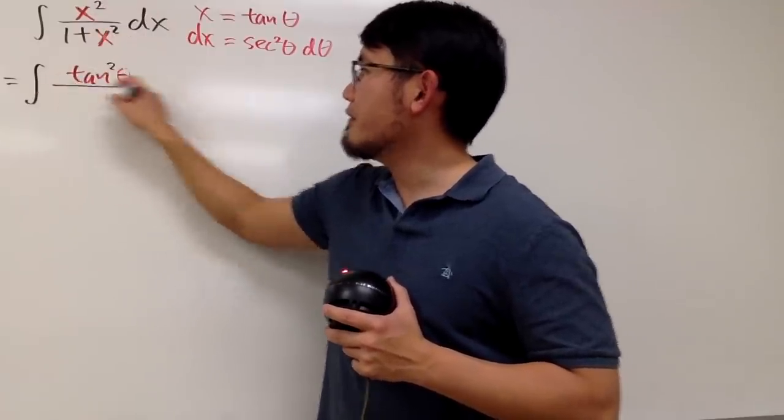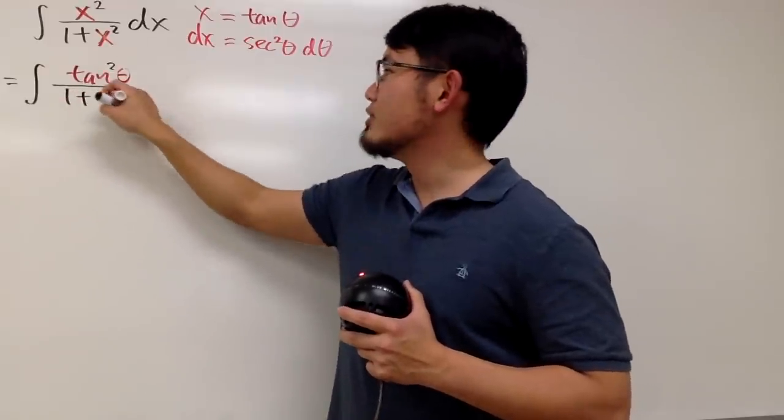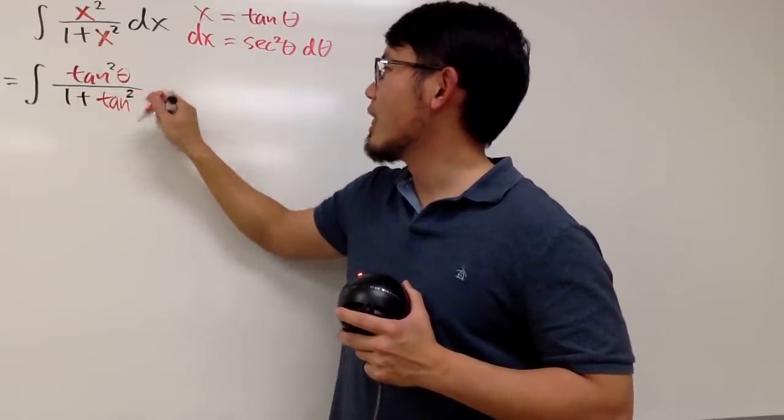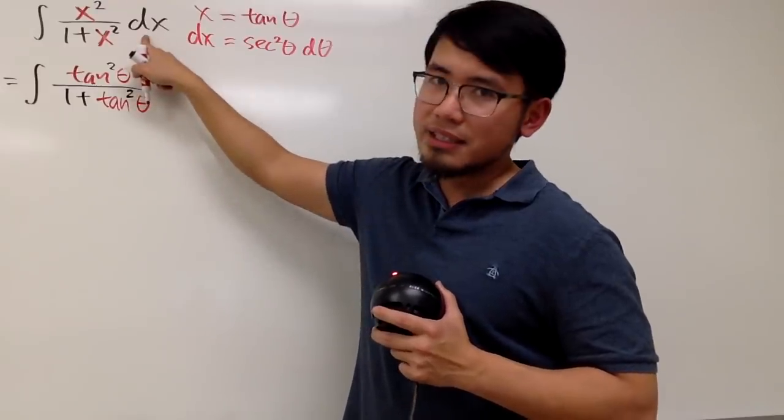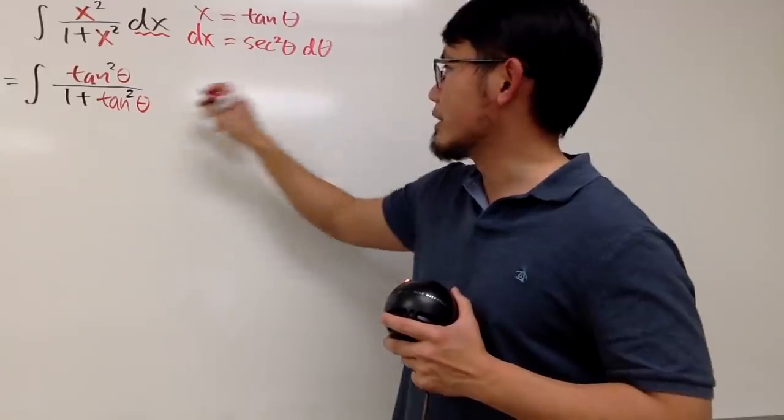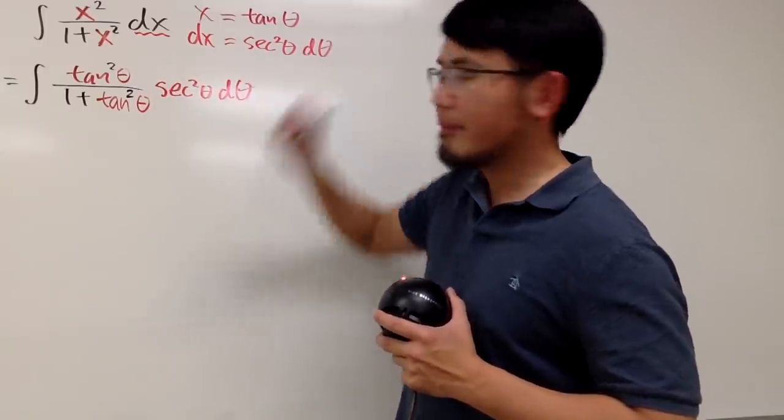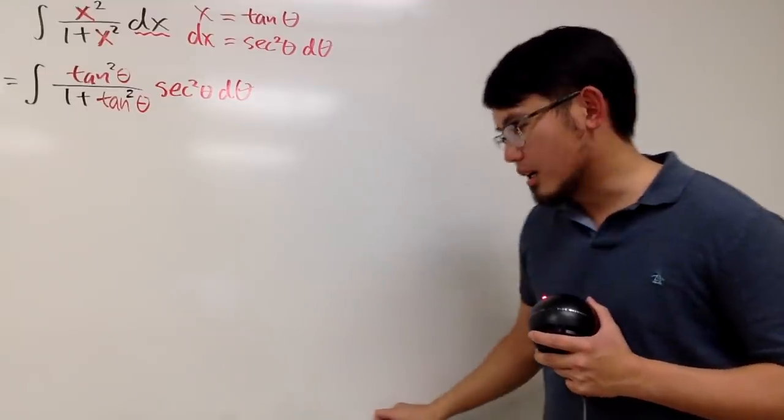And then on the bottom, we have 1 plus, this is again, tangent squared theta. And now, dx is this, so don't forget about dx. Let's write that down, which is secant squared theta d theta. And now, everybody is in the theta world.